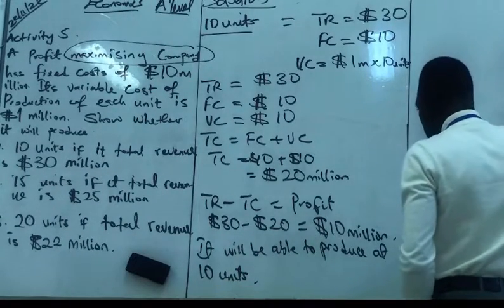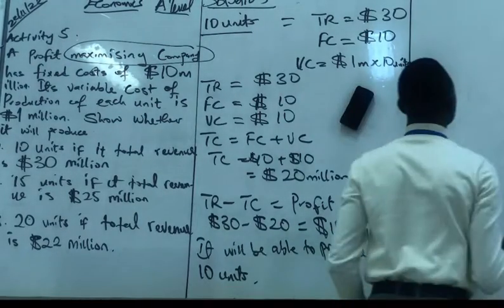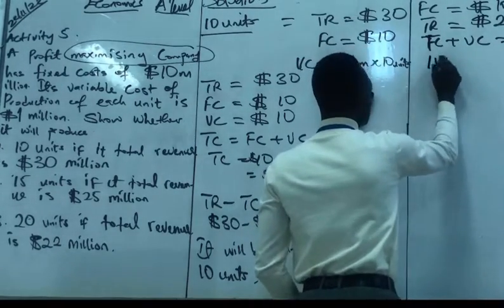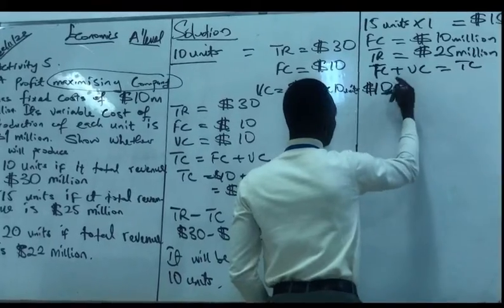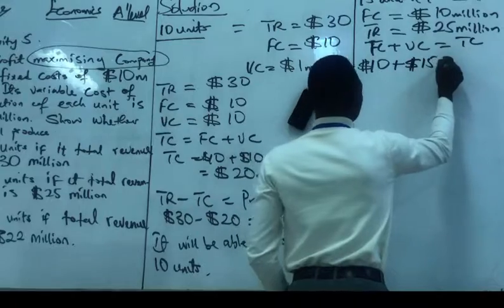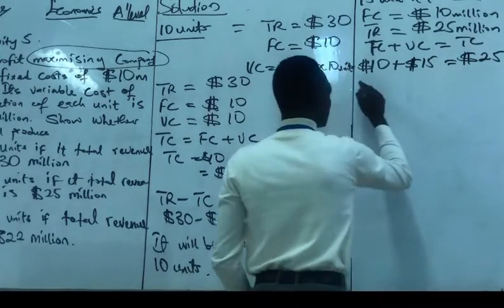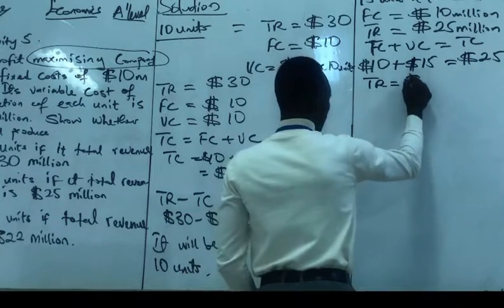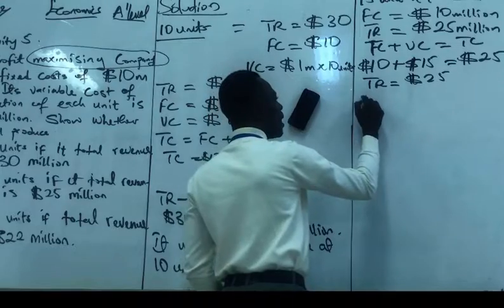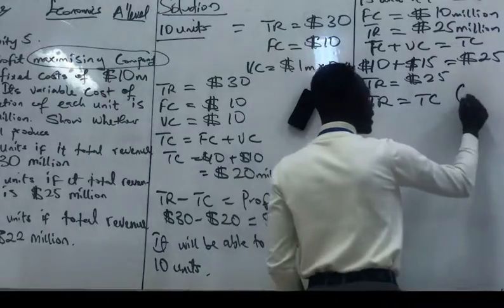Next one: 15 units. So what is the FC? 10 million. 10 million. So the amount of profit here, we have total revenue equal to total cost. This is what we call break even.